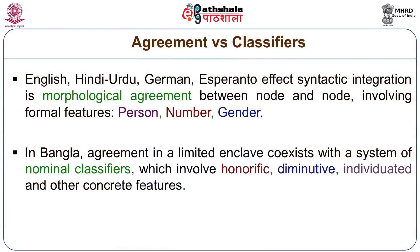We begin by noting that nearly all the languages from which we have been drawing our examples are morphological agreement languages, but that Bangla — one language from which we have been drawing a large number of examples because it is my mother tongue — uses nominal classification devices, especially classifiers, and that classifier languages differ crucially in their organization from agreement languages.